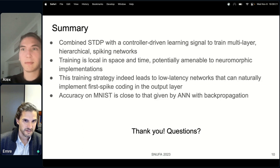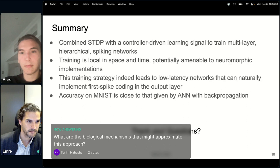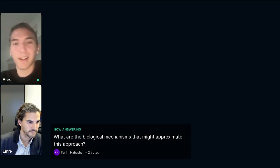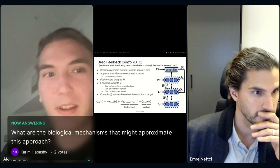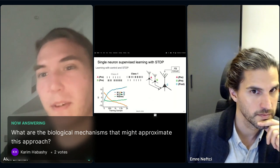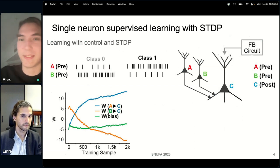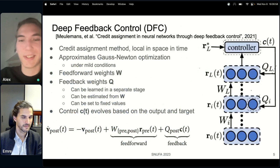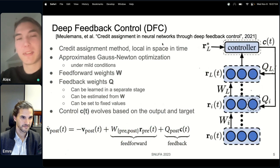All right, thank you Alex for this talk. Let's go straight to the questions. The first one is by Karim Habashi and it is what are the biological mechanisms that might approximate this approach? Yeah I'm not a biology expert. I would refer to the original paper here by Millmans where they actually explain what the bioplausible elements are that can implement this as a control signal. So I'd rather not to go into that myself to not say something wrong, but yeah I really recommend this paper by Millmans on DFC.